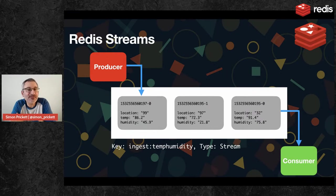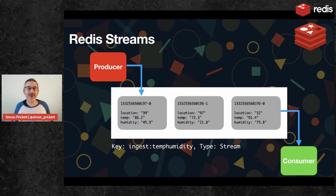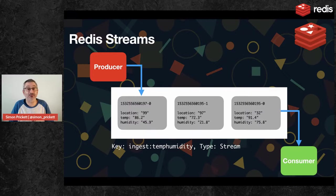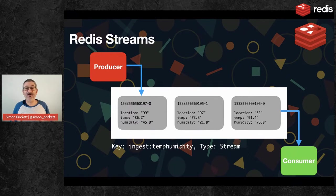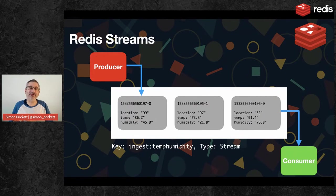A Redis stream is something that approximates an append-only log type data structure. You can put log entries in there and read them out again. You can actually delete them, but once they're in, they're immutable — you can't change them. That has some benefits: in a logging situation, you don't want to be able to change history. The way that streams are organized in Redis is that everything in a stream has to have a unique ID. When you add something to a stream, the unique ID needs to be greater than the ID of anything that already exists in the stream, so there's a natural order here.